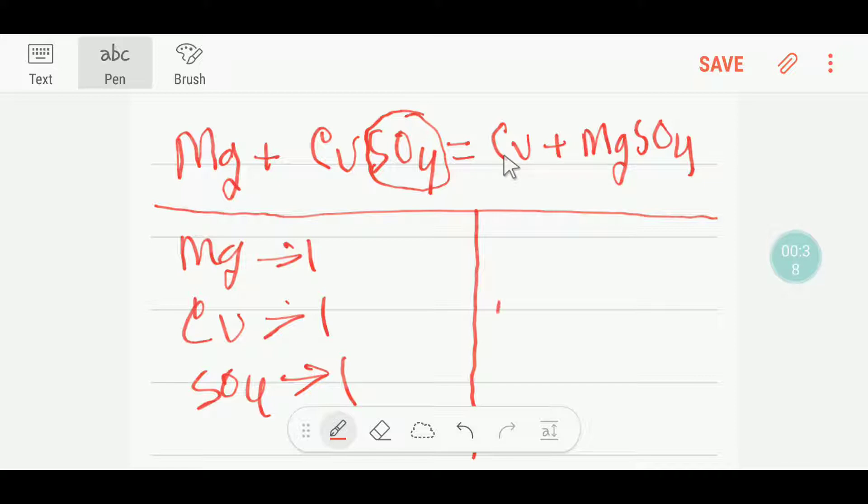On the right-hand side, we have one copper here, we have one magnesium here, and we have one sulphate.